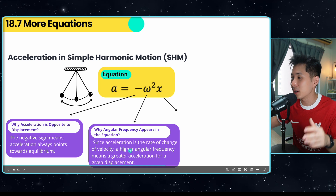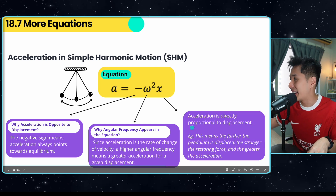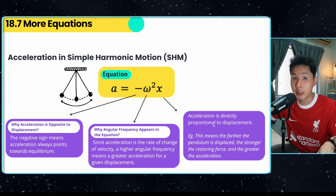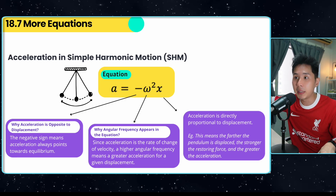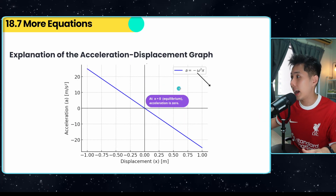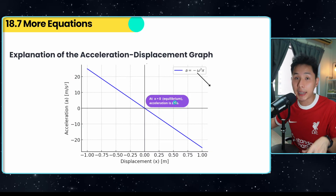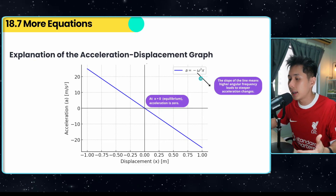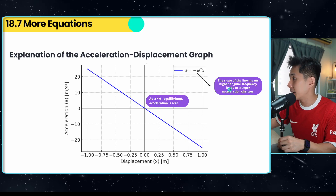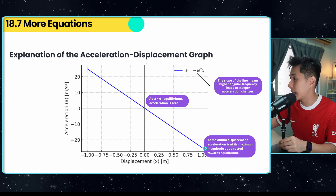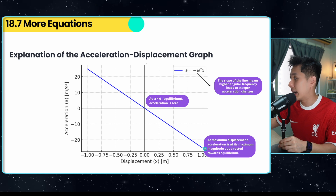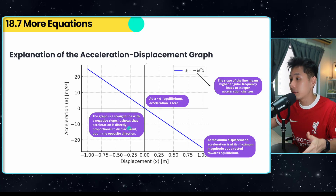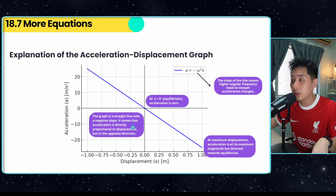Angular frequency appears in the acceleration equation because acceleration is the rate of change of velocity — higher angular frequency means greater acceleration. Displacement x also appears because acceleration is directly proportional to displacement: the further the pendulum moves, the higher the acceleration. Looking at the acceleration-displacement graph: at x = 0, acceleration is zero; at maximum displacement, acceleration is at its most negative value (e.g., −20). The graph is a straight line with a negative slope, confirming that acceleration is directly proportional to displacement but in the opposite direction.